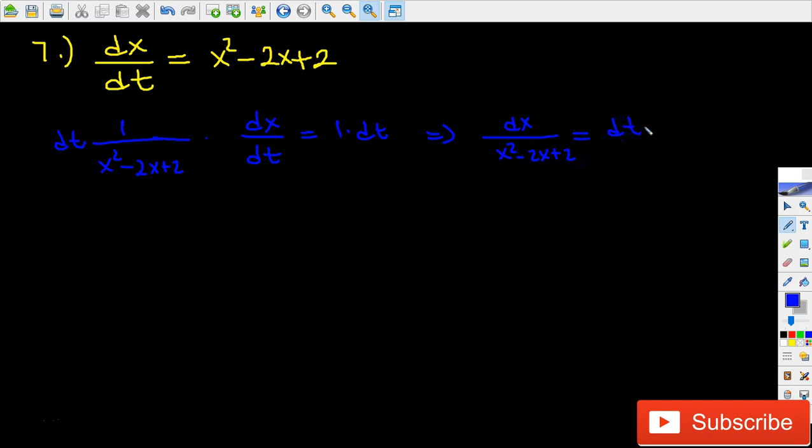You see that we've separated the variables, so as a last step I'm going to take the integral of both sides. For the left hand side, how do we figure out the integral? Because we have the quadratic function in the denominator, there's a lot of methods for tackling that integral.